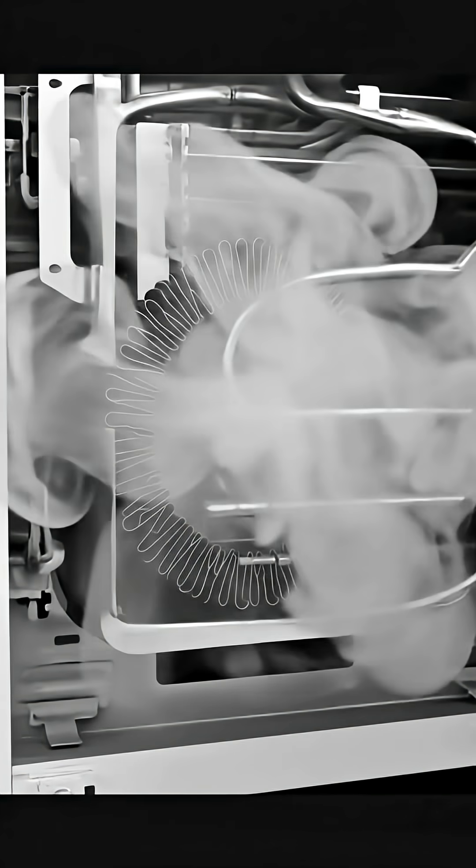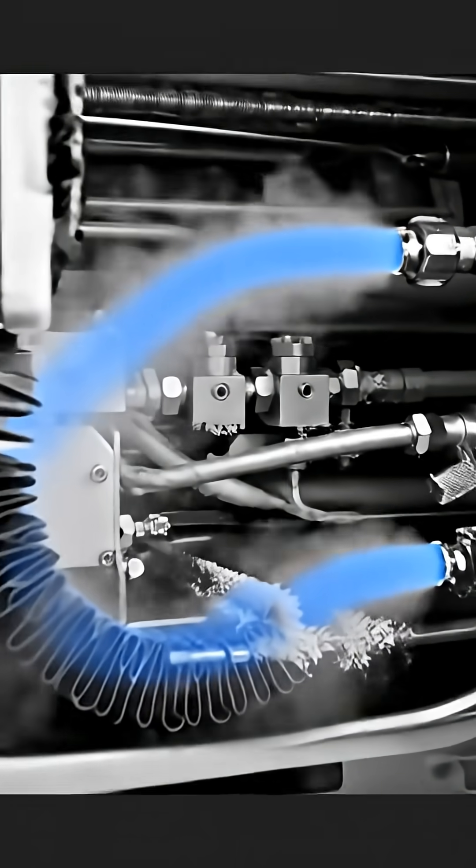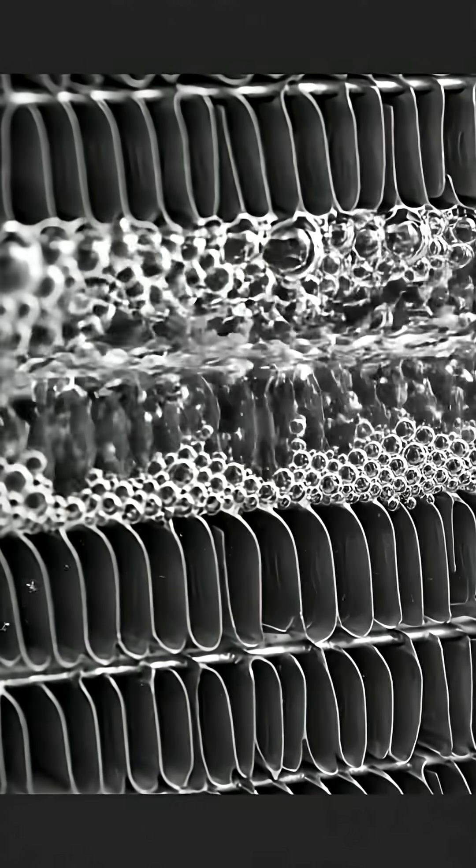The high-pressure liquid refrigerant passes through the expansion valve, rapidly dropping the pressure and temperature. The supercooled refrigerant enters the evaporator coil, absorbs heat from the inside of the fridge, and produces cold air.